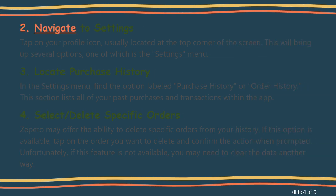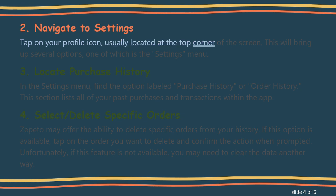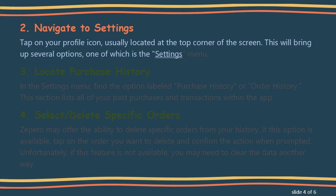Step 2: Navigate to Settings. Tap on your profile icon, usually located at the top corner of the screen. This will bring up several options, one of which is the Settings menu.